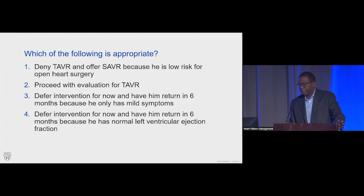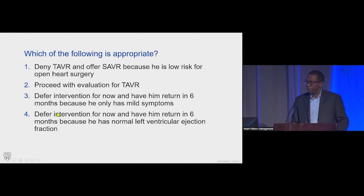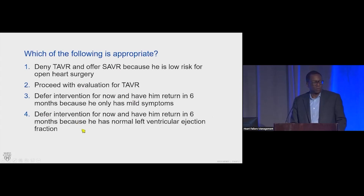Options are: deny TAVR and offer SAVR — deny transcatheter valve replacement and offer surgical aortic valve replacement because it's low risk for open-heart surgery; proceed with evaluation for TAVR; defer intervention for now because he only has mild symptoms and see him back in six months; or defer intervention because of a normal left ventricular ejection fraction.